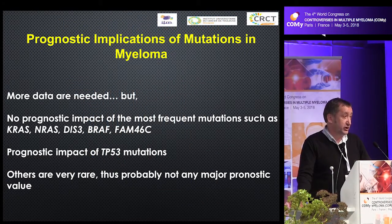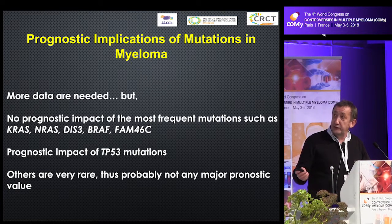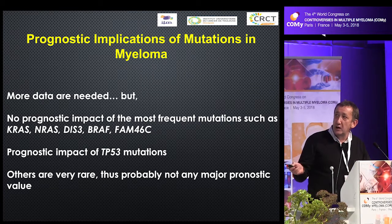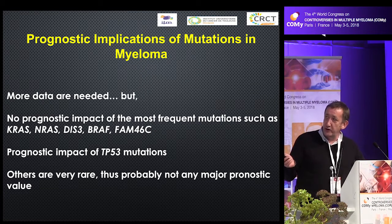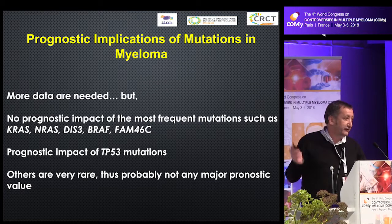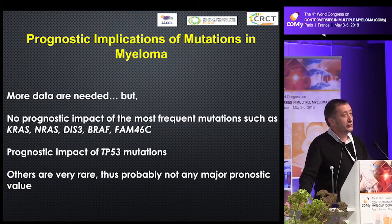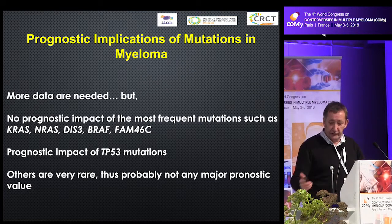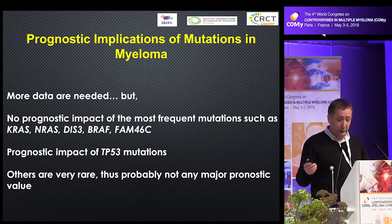In the future we probably need more data, but we already have more than 1,000 patients sequenced. It has been shown that all the most frequent abnormalities have no prognostic impact. The only one associated with high risk is TP53 mutations, usually observed in patients with 17p deletion. Maybe we will identify rare mutations with good or poor prognosis, but I'm not sure it will be very useful.